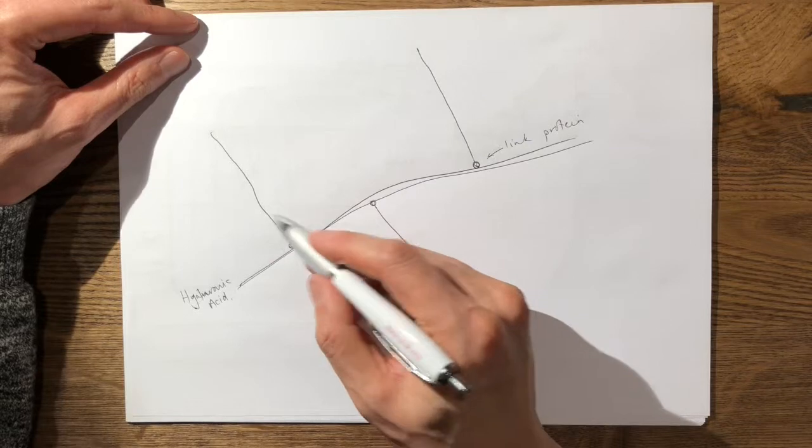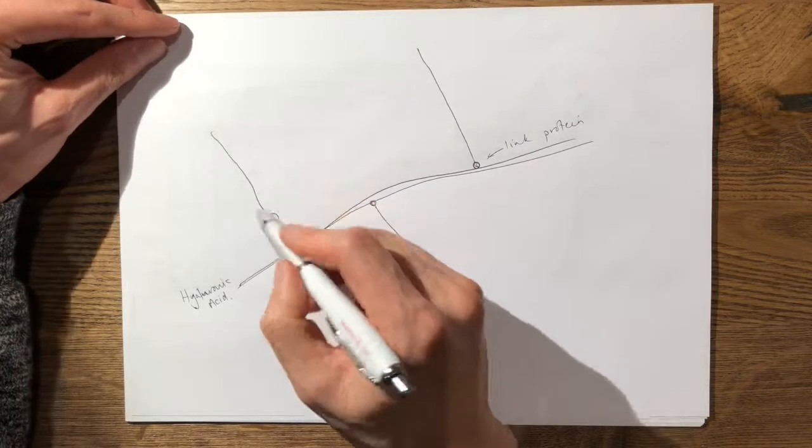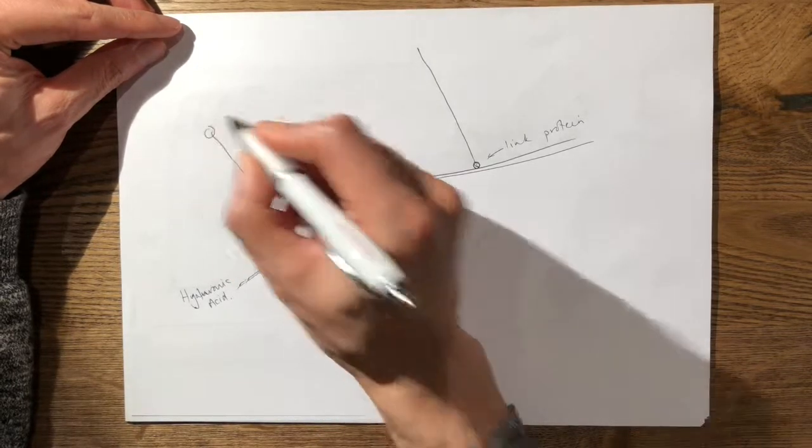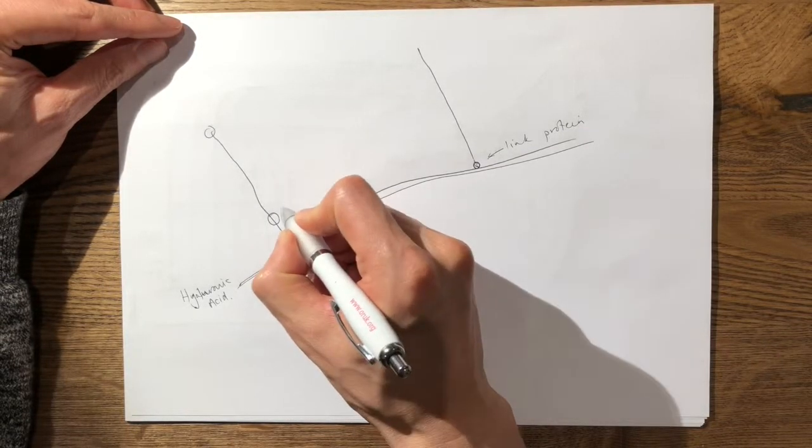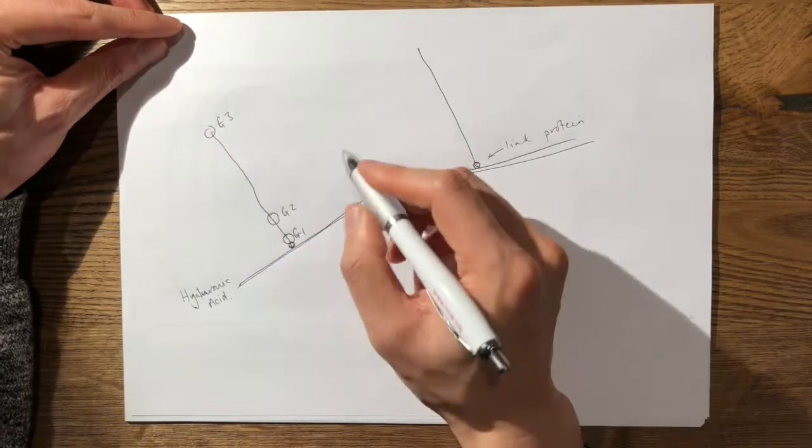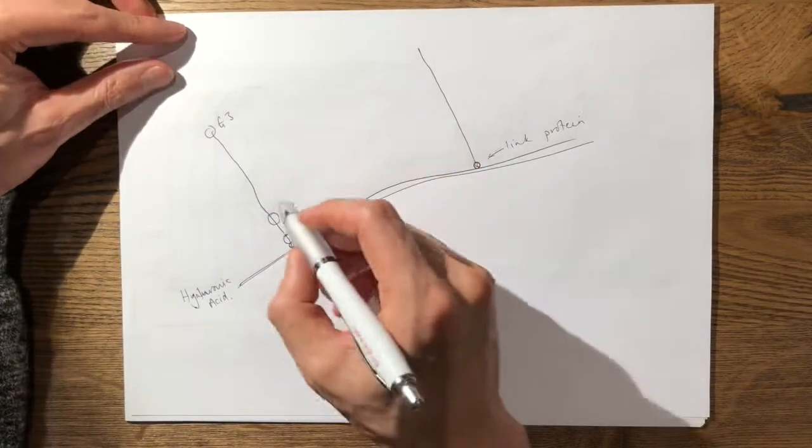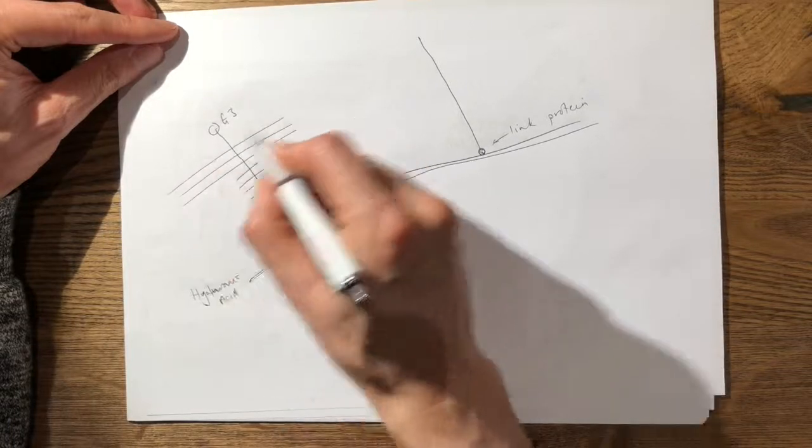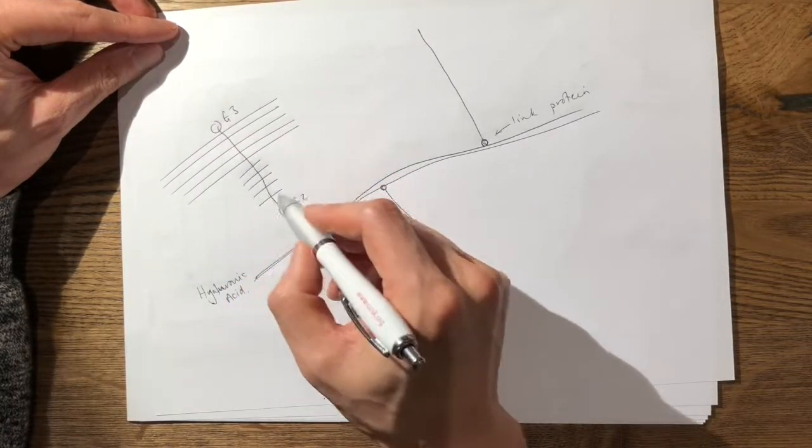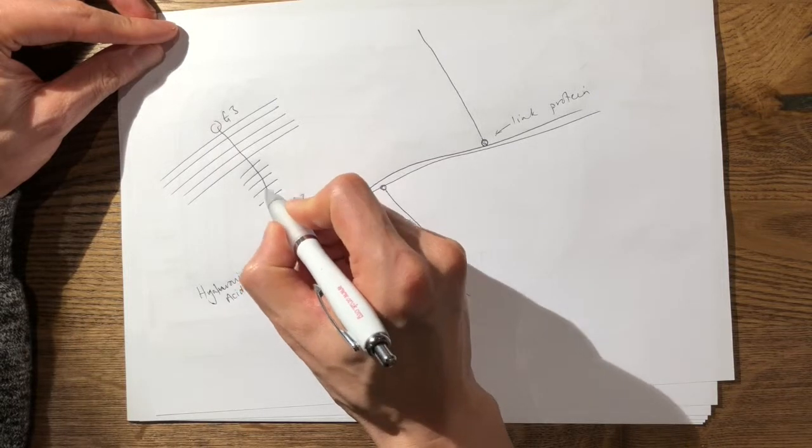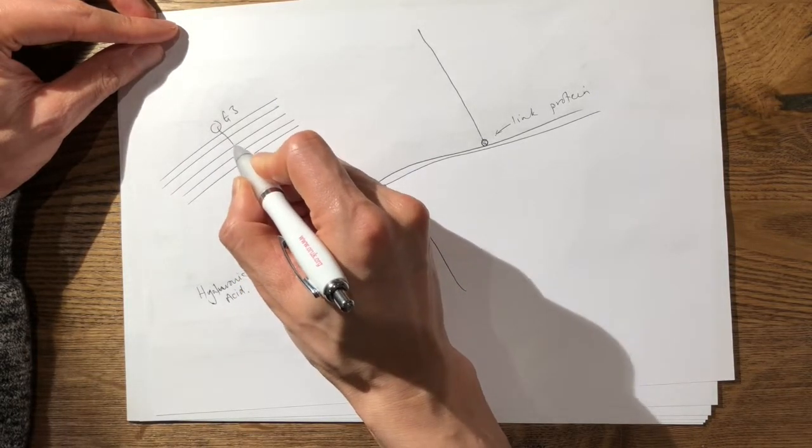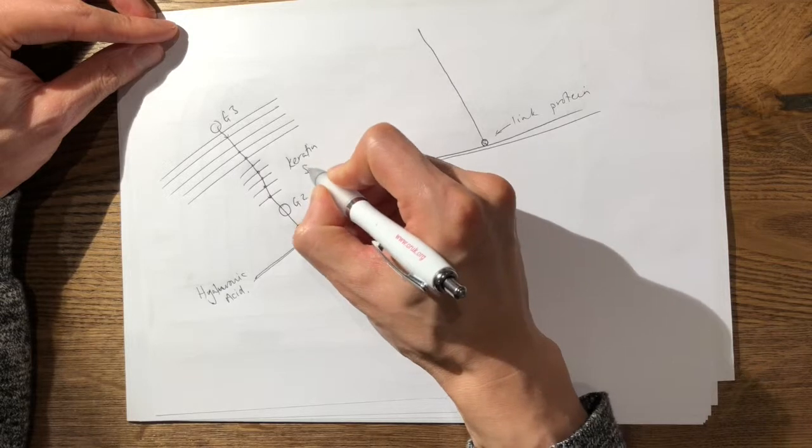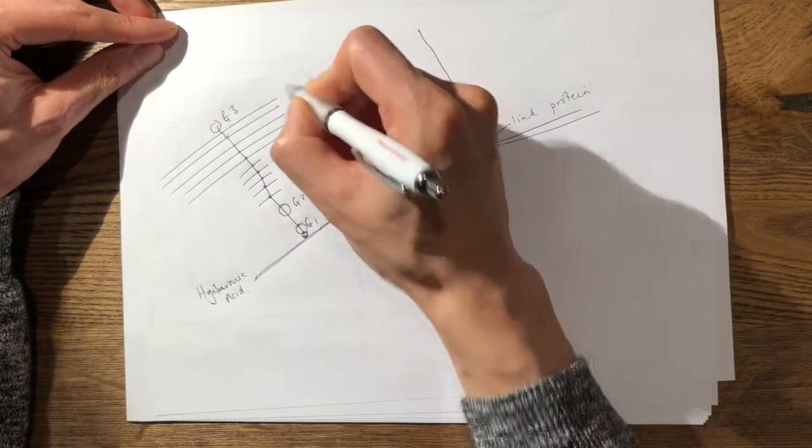And on the protein core, you have separate other protein molecules, which are unnumbered. They're called the G1 protein, G2 and G3 proteins. And between the G2 and the G3 proteins, you have your keratin sulfate, which are smaller in shape, and your chondroitin sulfate. And these are joined or linked onto the protein core by sugar bonds. So these are sugar bonds here. And so this is your keratin sulfate. And above, you have your chondroitin sulfate.